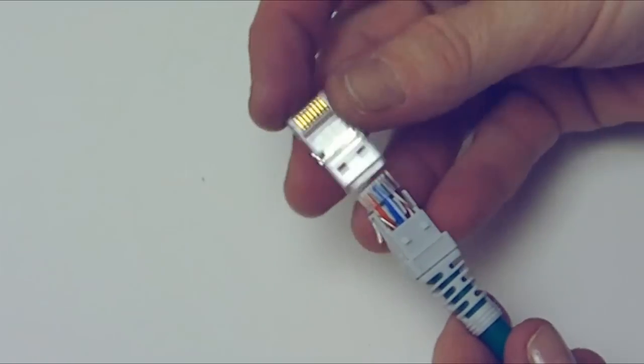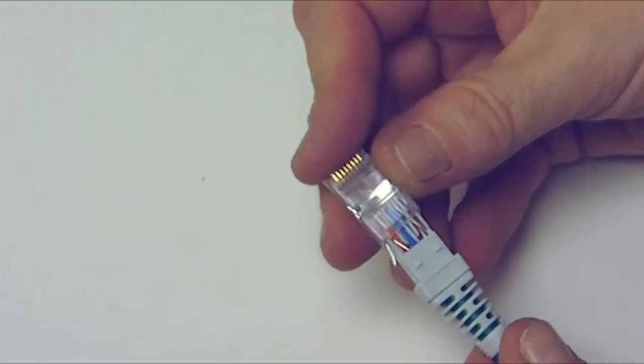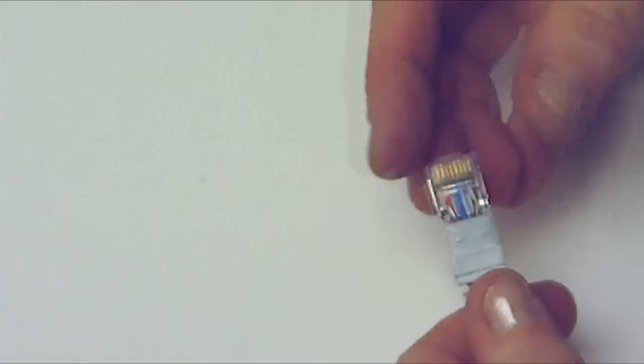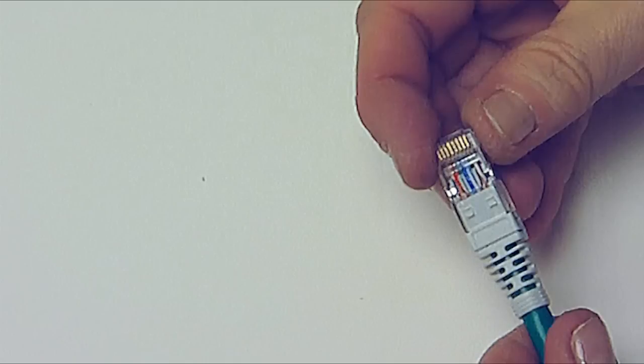Slide the connector over the loading bar. It is important to ensure that the drain wire is in place. Slide the connector in until the strain relief tab snaps in place.